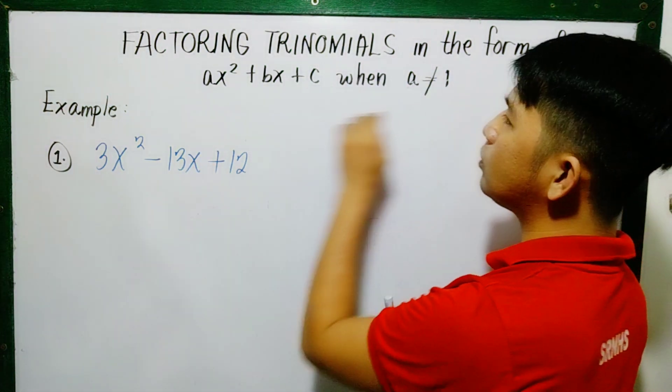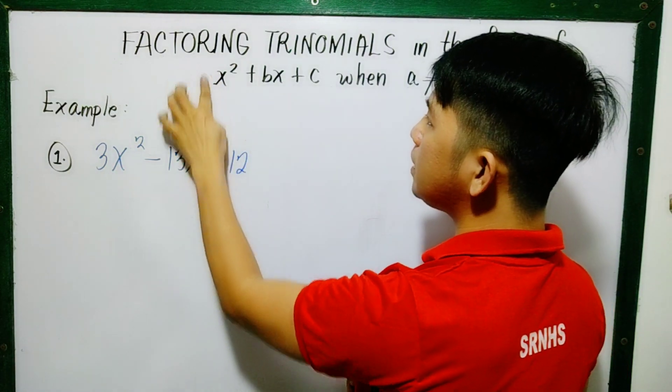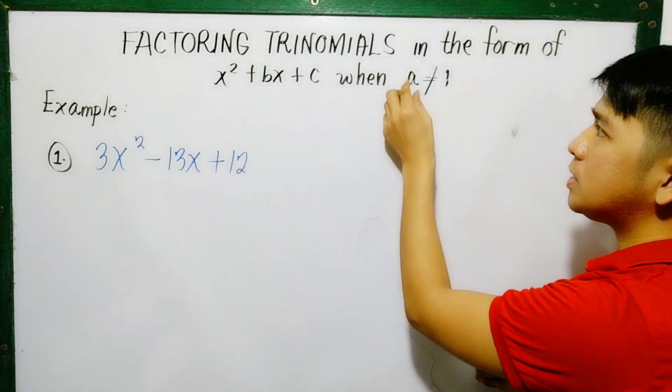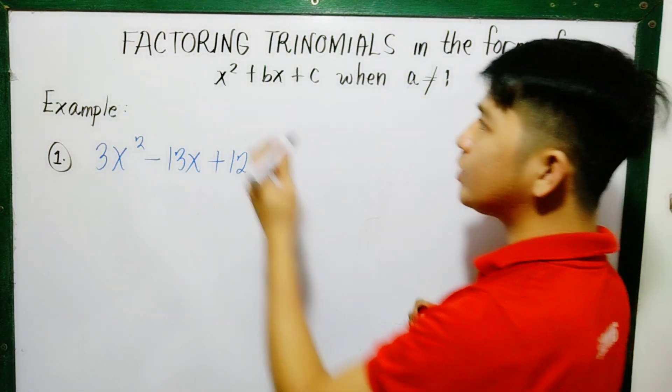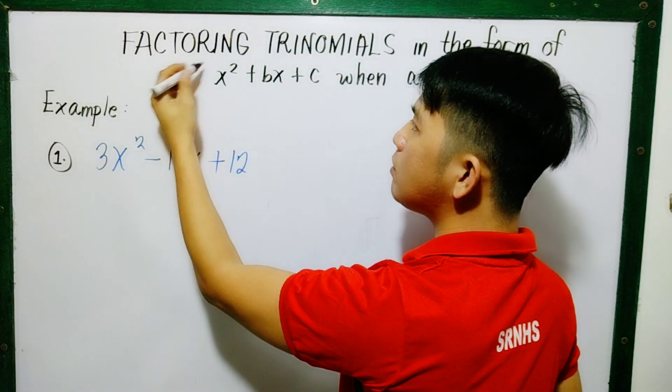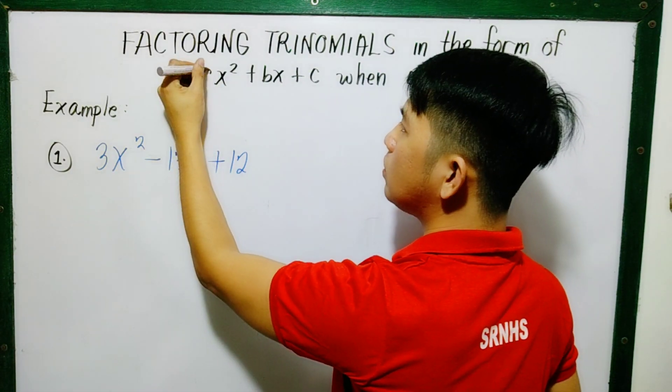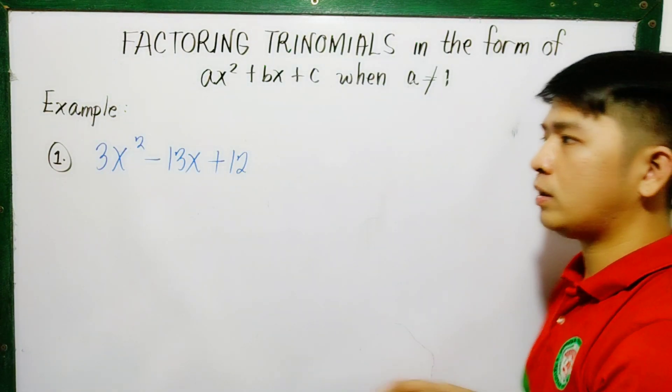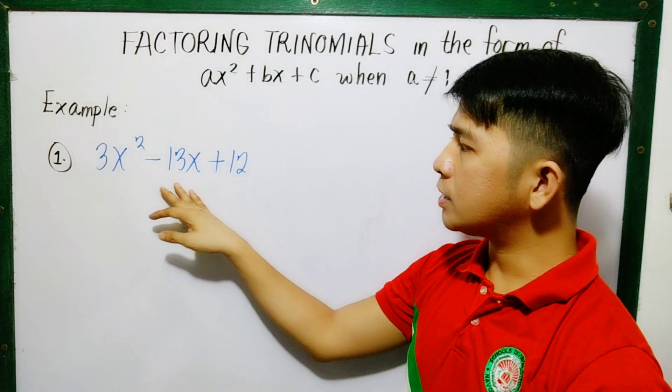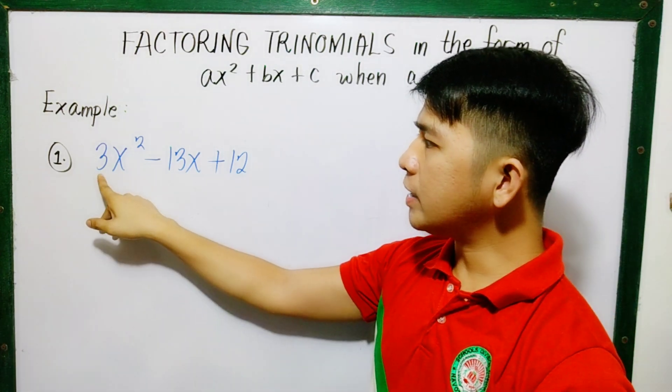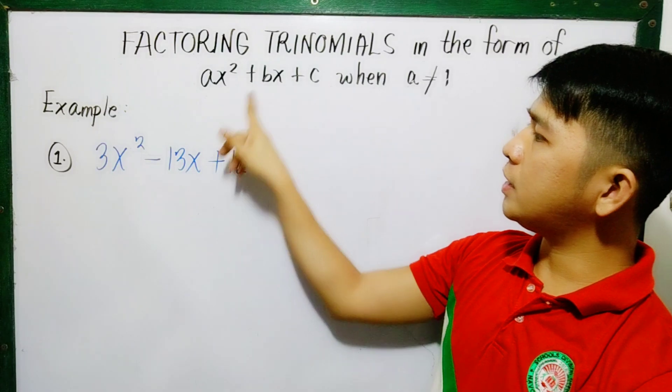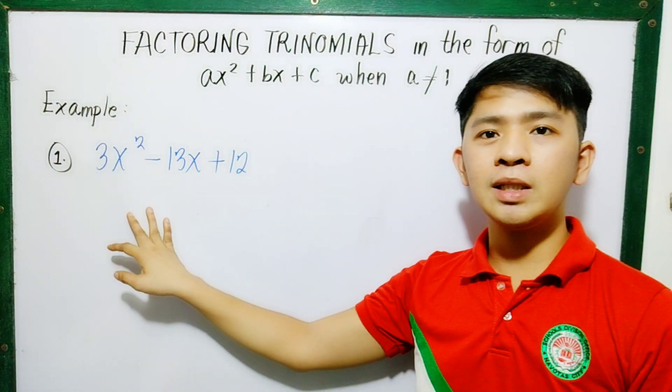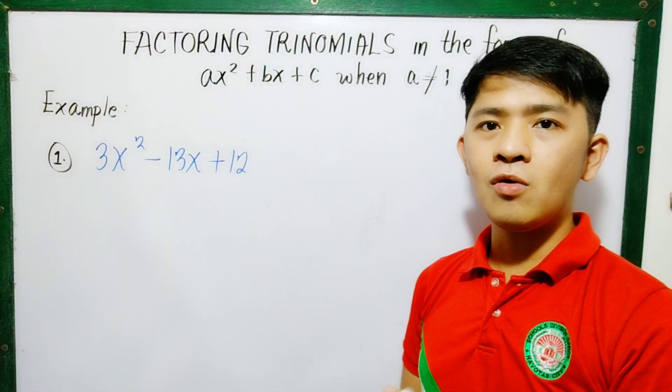When a is equal to 1, there's no number before x squared, before the quadratic term. But since when a is not equal to 1, it can be 2, 3, 4 and so on. So a is now not 1. So how are we going to factor it? Follow me on how to do this.